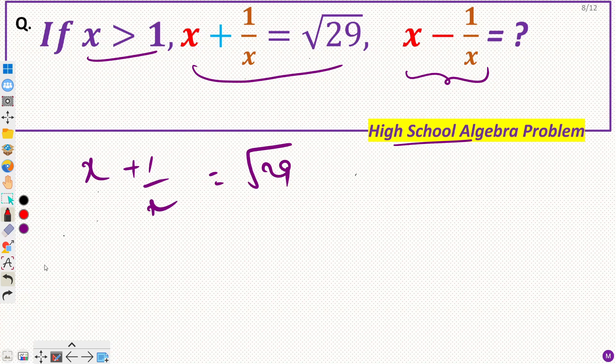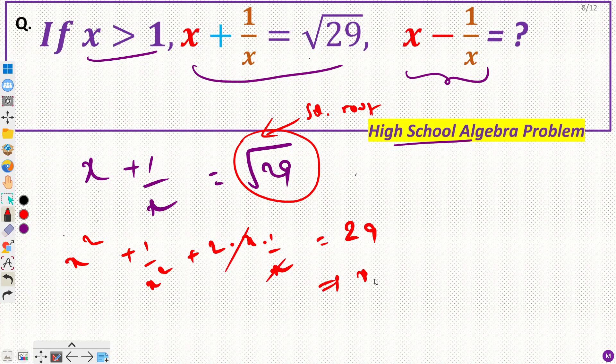The very first thing that you would consider is to get rid of this square root, and the best way is to square both sides. So x square plus 1 by x square plus 2ab, so 2 into x into 1 by x, equal to root 29 square, that will be 29. So from here you get x square plus 1 by x square is 29 minus 2, that will be 27.